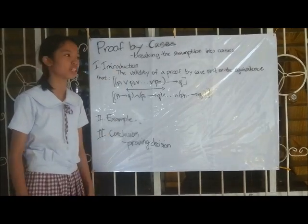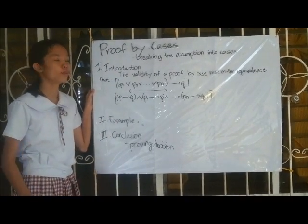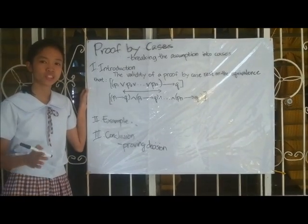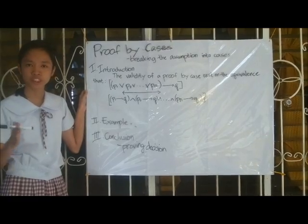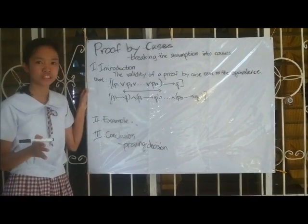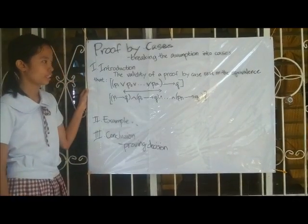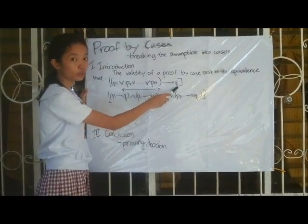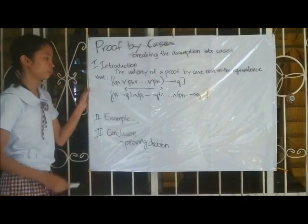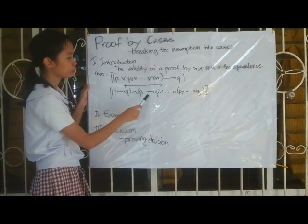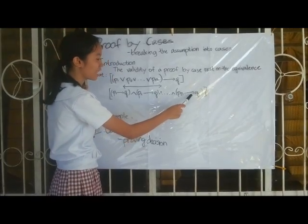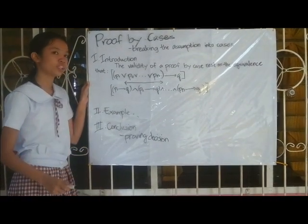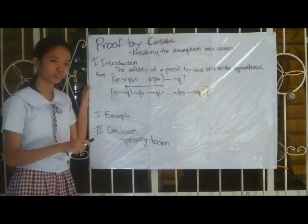Now we'll discuss proof by cases, which simply means breaking the assumption into cases. Sometimes the hypothesis of a statement can be broken down into simpler cases to be investigated separately. The validity of a proof by cases rests on the equivalence that case 1 or case 2, all the way to case n, implies Q — which breaks down into: case 1 implies Q, case 2 implies Q, all the way to case n implies Q.